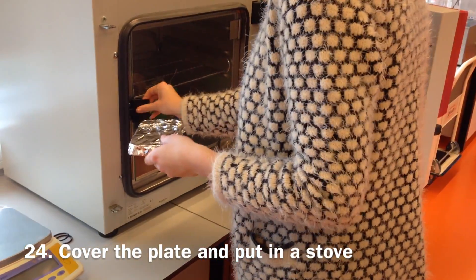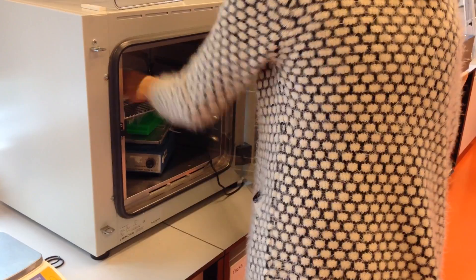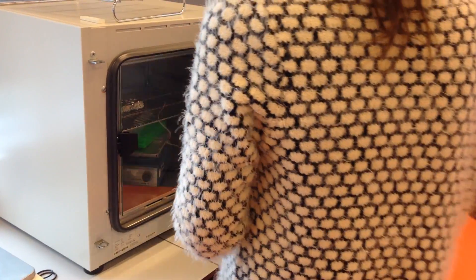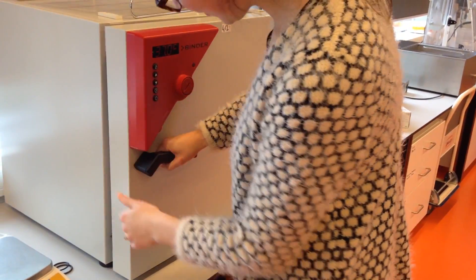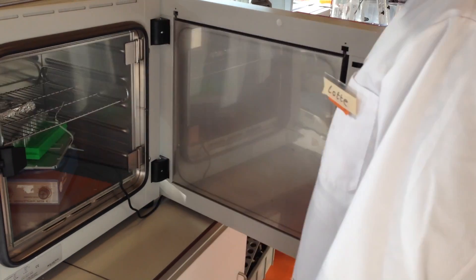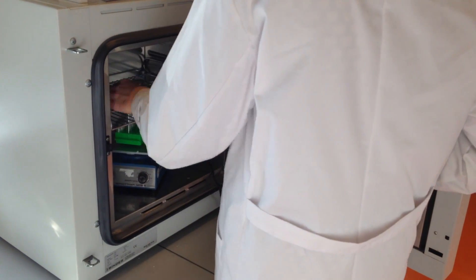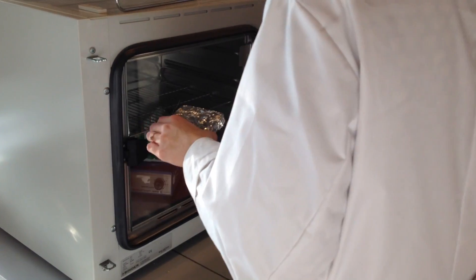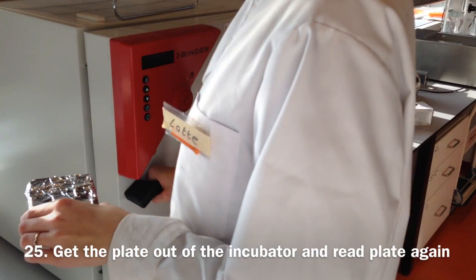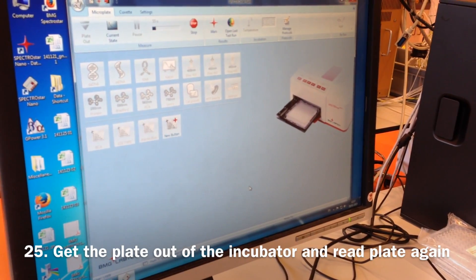After reading the plate in the spectrophotometer, the plate must be covered in aluminum foil to prevent light from influencing reaction. Incubate the aluminum covered plate for 30 minutes in a stove. After incubation read the plate again on the spectrophotometer at the same setting as used before.